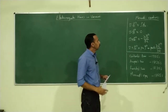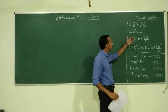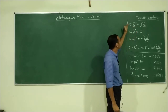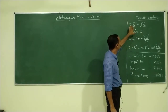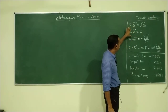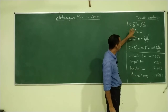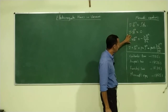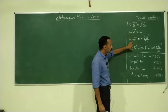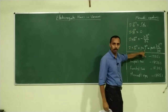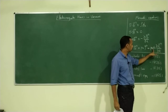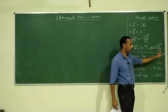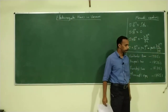We have already introduced Maxwell's equations: Gauss's law, del dot B is equal to zero, Faraday's law, Ampere's law with Maxwell's correction term — mu zero epsilon zero dou E by dou T.